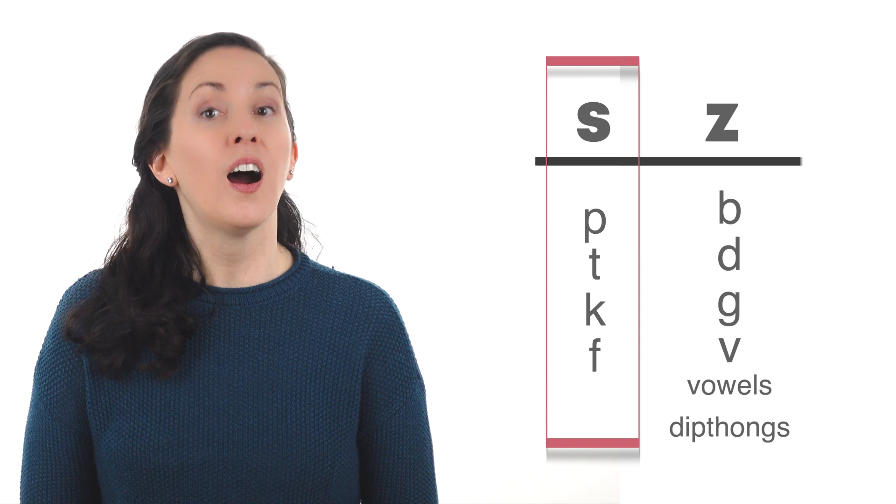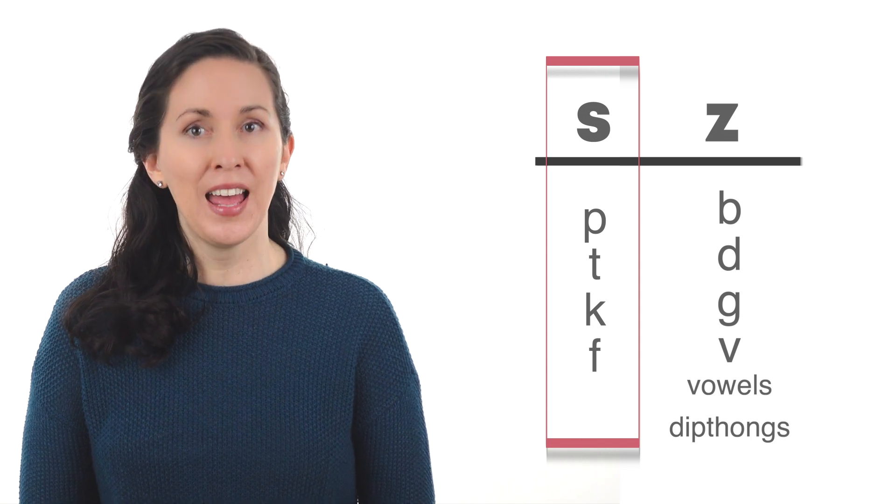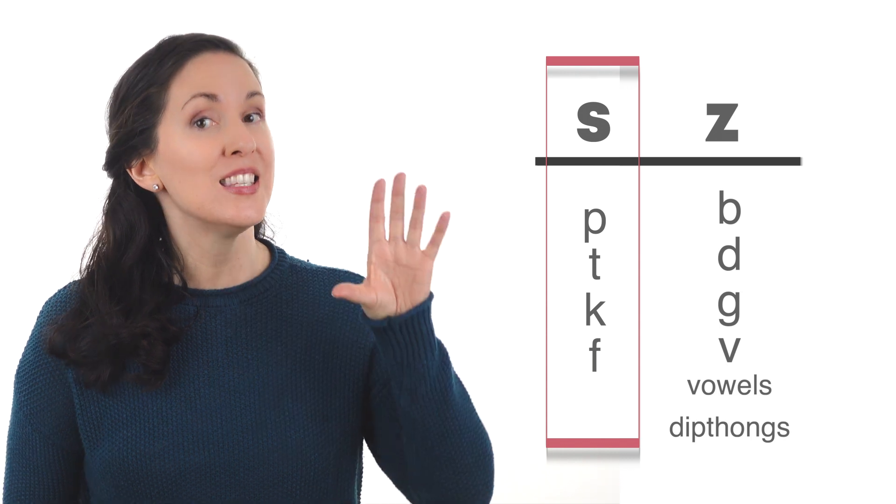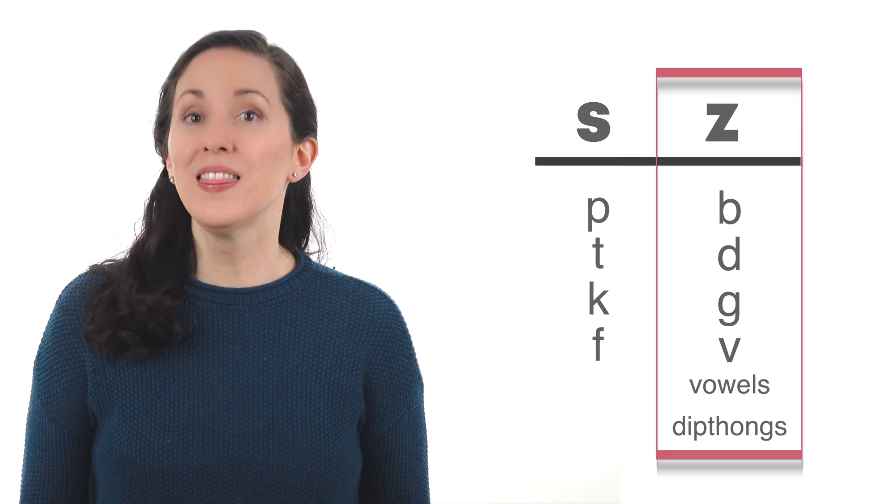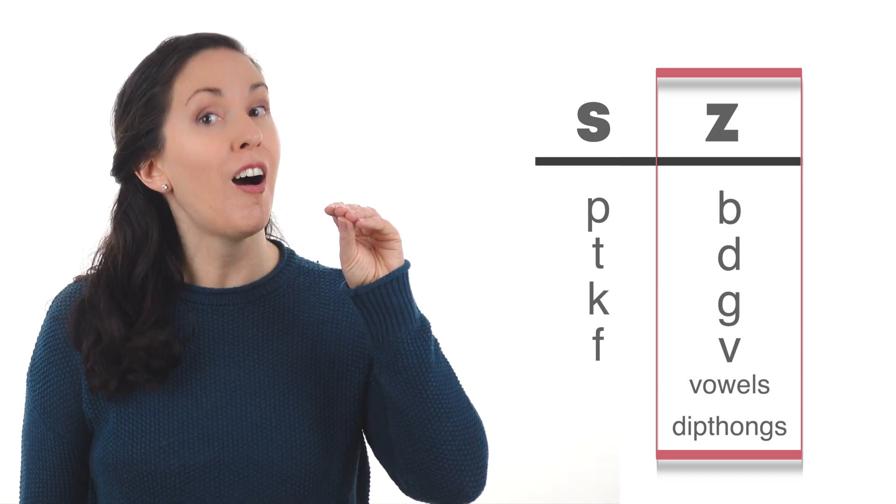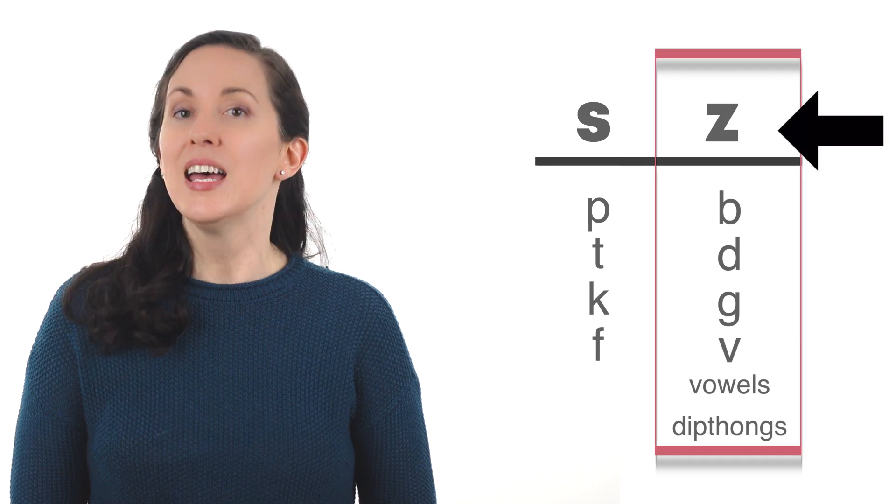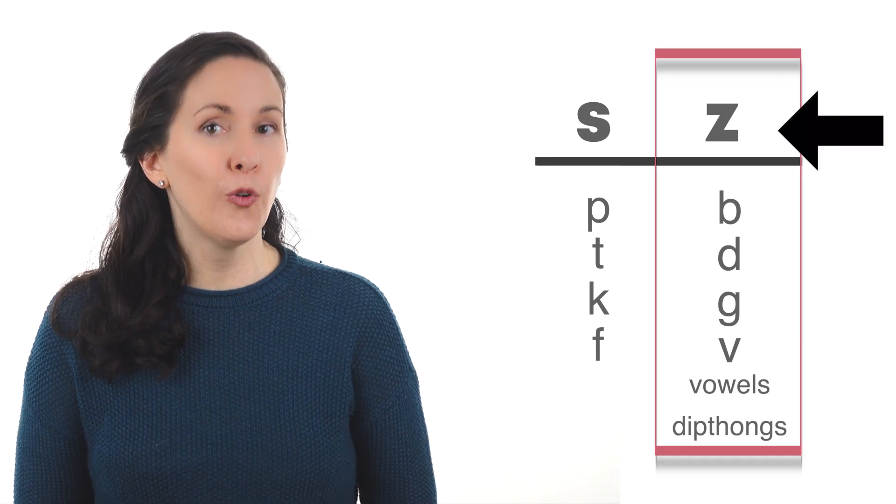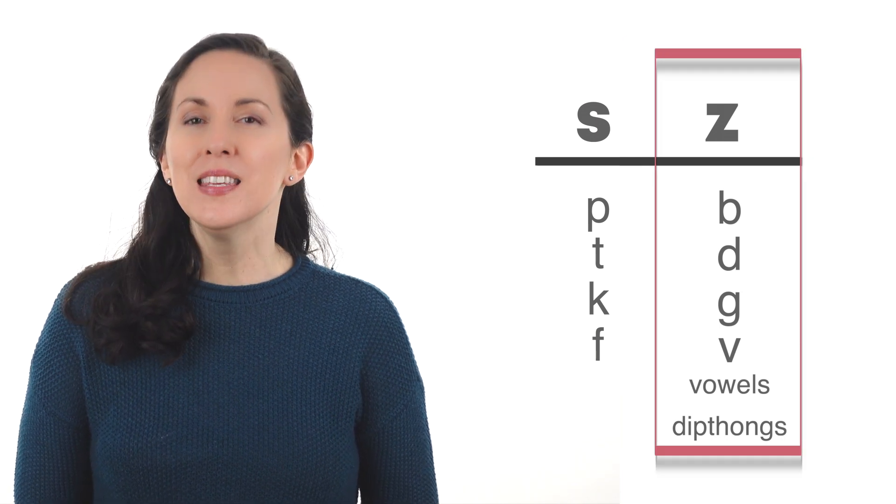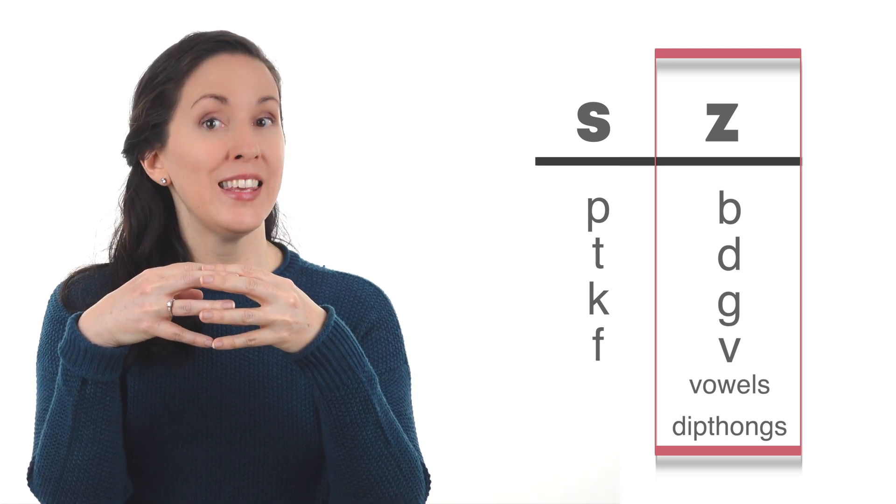Let me show you. These sounds are voiceless. When you make a voiceless sound, your voice is turned off. These sounds are voiced, so your voice is turned on. S goes with voiceless sounds and Z goes with voiced sounds. This helps the sounds flow together better and easier.